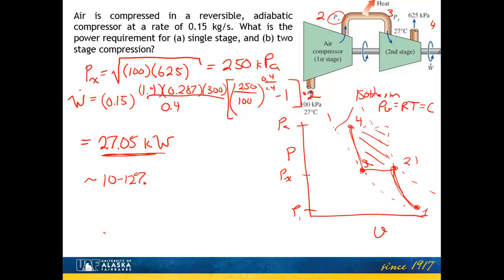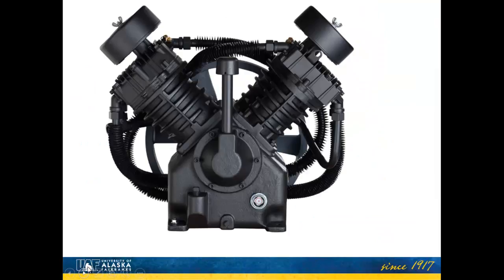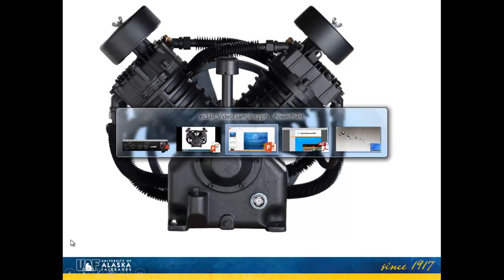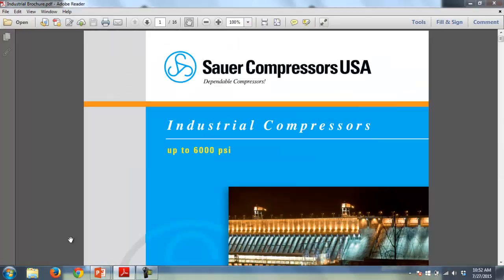But I just want to kind of mention a couple of things on what these compressors look like. And so here I have a picture of a two-stage compressor. In fact, actually, first, let's go ahead and look at a brochure that I have. Okay, so here's an industrial compressor brochure from Sauer Compressors. And these are large industrial compressors, as you see here, up to 6,000 psi.